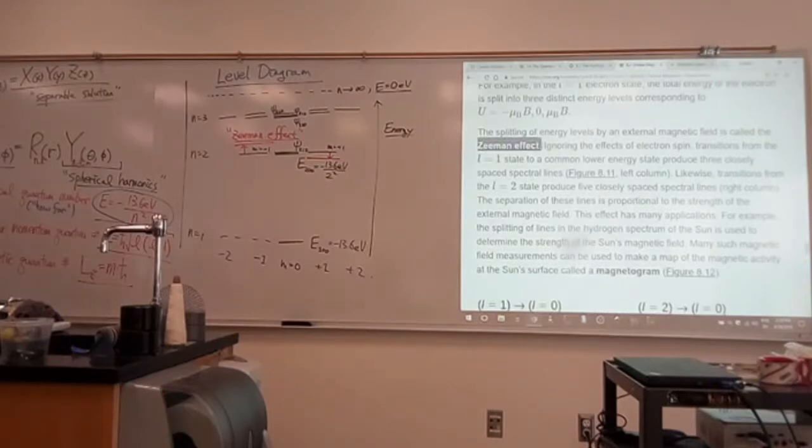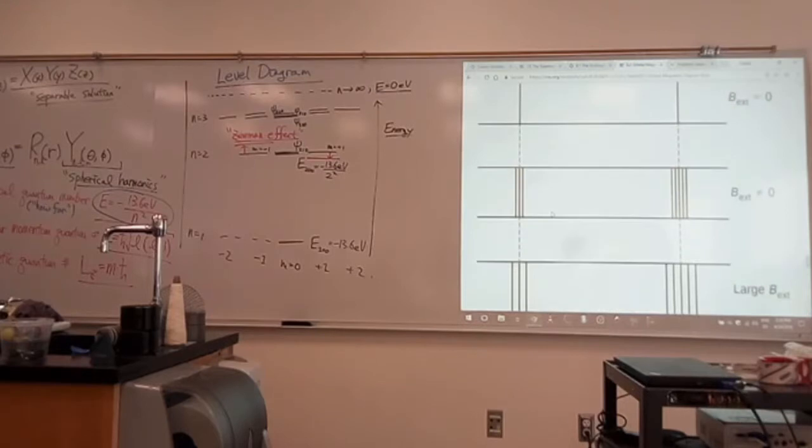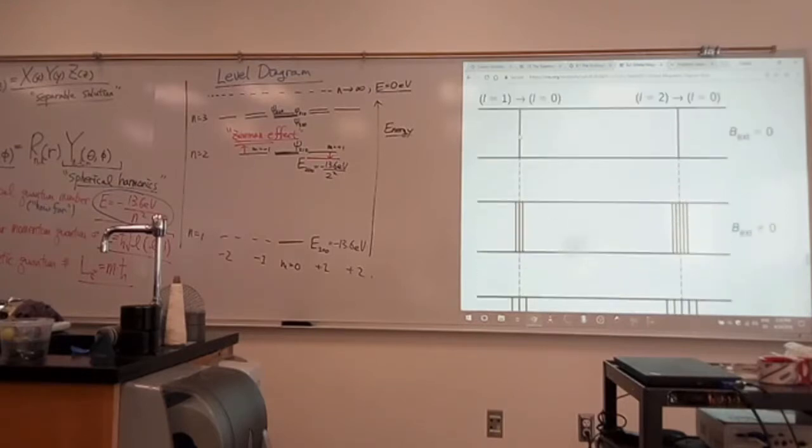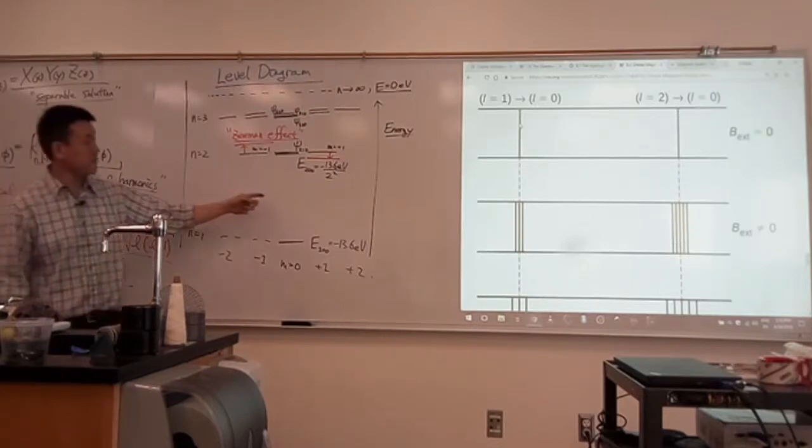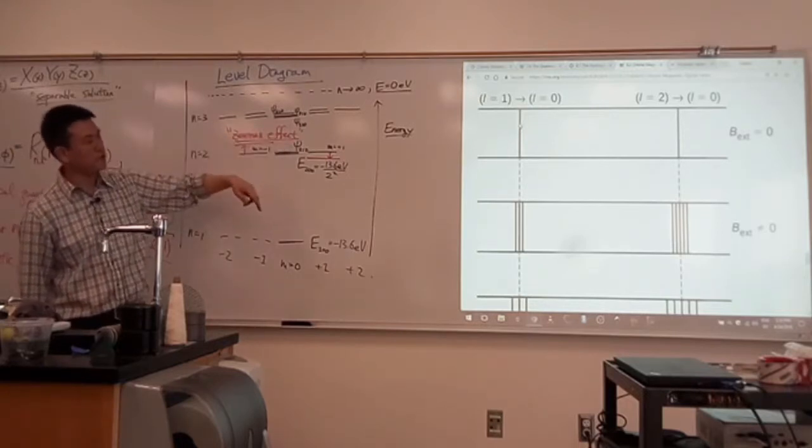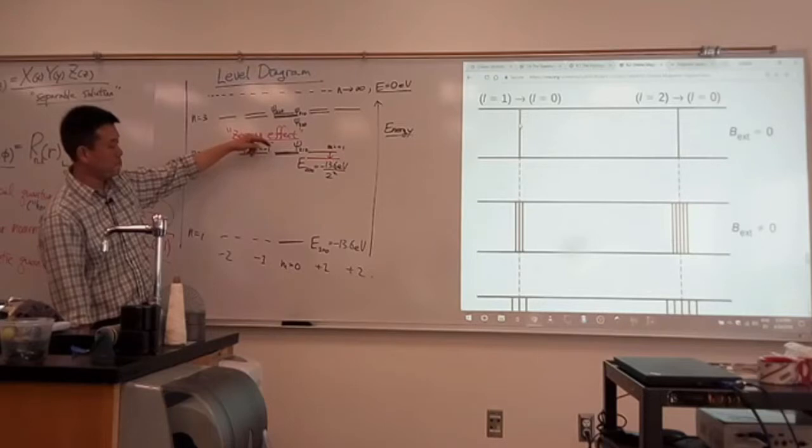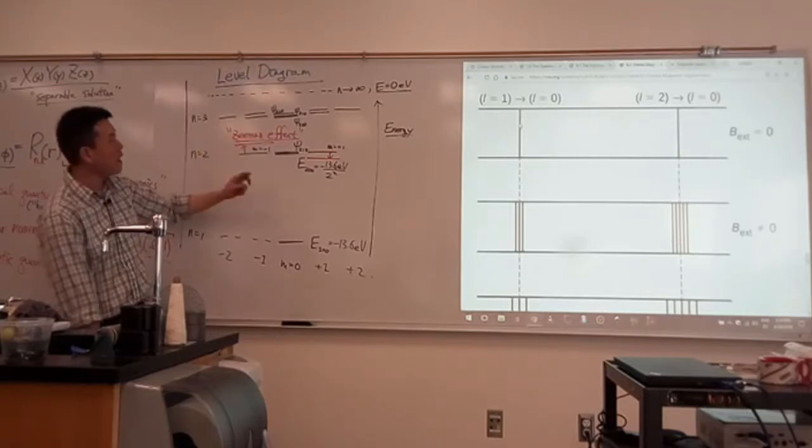The effect of this Zeeman effect is that these energy levels split. Where they used to be at the same... I guess they are plotting the transitions where they used to be... This L equals 1 to 0 transition, it's actually potentially three different transitions. Because it's either... Four different transitions. Subject to a selection rule that might rule out one of them. Oh, actually three.